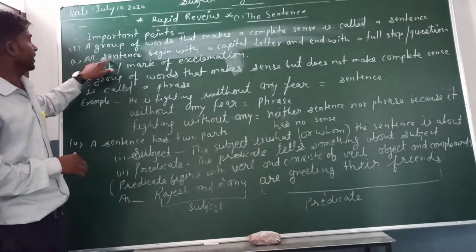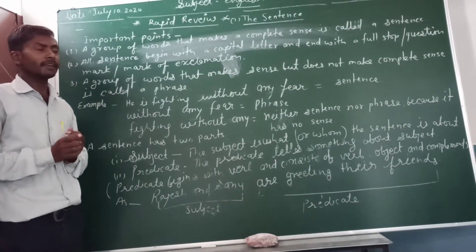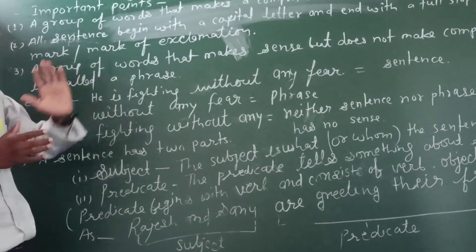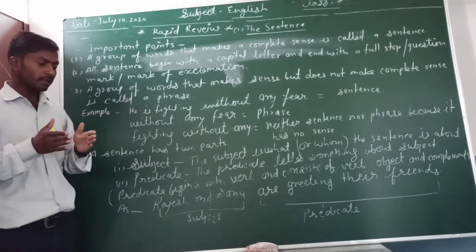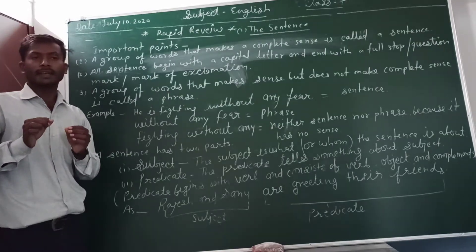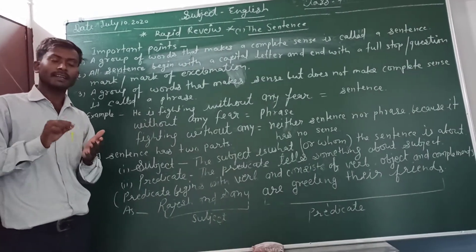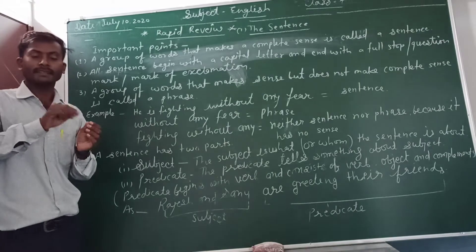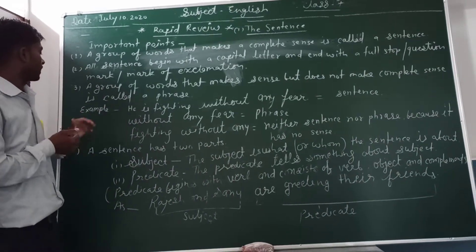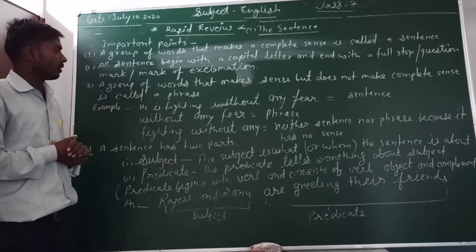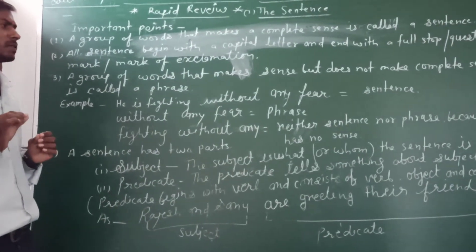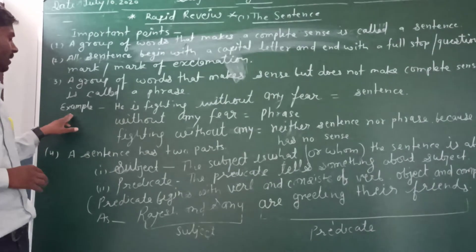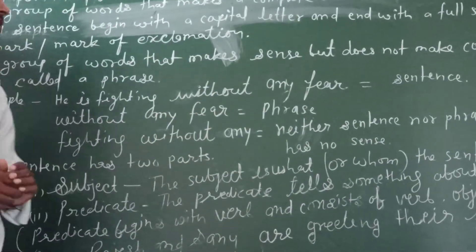Another point: a sentence begins with a capital letter and ends with a full stop, question mark, or exclamation mark. When we begin a sentence, we write a capital letter and end with a full stop or exclamation mark. For example, 'He is fighting without any fear' — this is a sentence.